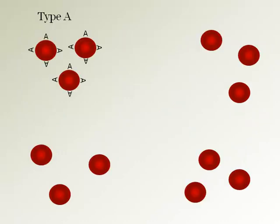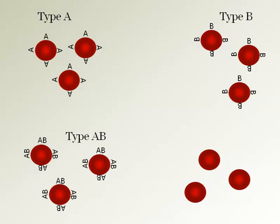Blood type A only has the A marker on the surface of the red blood cell. Blood type B has only the B marker on the surface of the red blood cell. Blood type AB has both the A marker and the B marker on the surface of the red blood cells. Blood type O does not have any marker on the red blood cell — think of O as nothing on the surface.